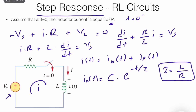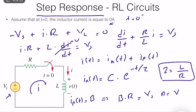For the particular solution, we use the same technique. We assume it is constant since the source is constant. So we let I particular of T equal to some constant B. Substituting into the equation, we find B times R equals Vs, so B is equal to Vs divided by R.